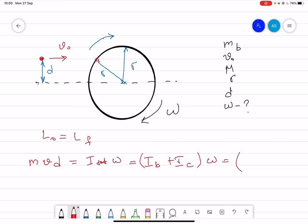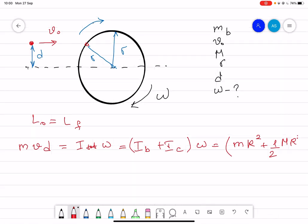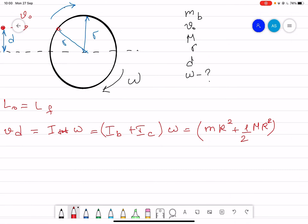What is the moment of inertia of the bullet? It is equal to m R squared plus, in the cylinder case, it is 1 over 2 capital M R squared times omega.